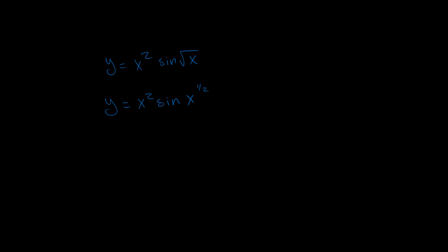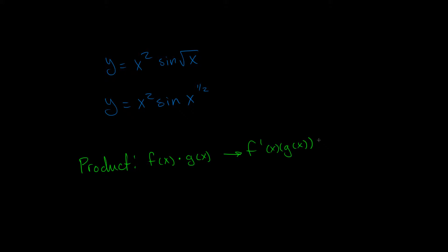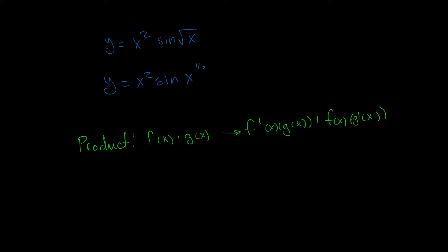Let's take a look at what rules we're going to be using to solve this derivative. The first one is the product rule. The product rule says that if we have f(x) times g(x), the derivative is f'(x) times g(x) plus f(x) times g'(x). All that's saying is we take the derivative of the first times the second, plus the derivative of the second times the first.